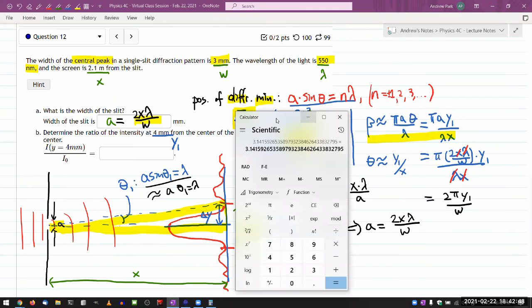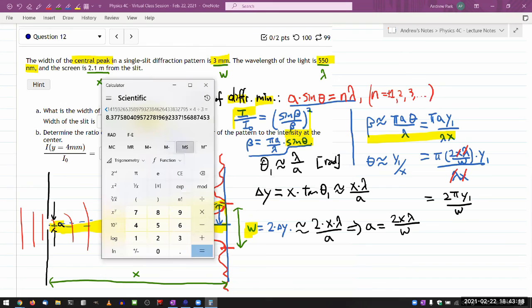So as I plug in numbers, let me watch out the units. 2 times pi times y1. That's 4 millimeter. Oh, all my numbers are in millimeters. So millimeters will cancel out. So 4 divided by the width 3 is equal to... yeah. So this is why I didn't use a small angle approximation with the beta, because it's definitely not small. So it's 8 points... radians. So let me store this into the calculator. And my calculator is already in radian mode, so I'm going to be fine as I plug in the numbers here.